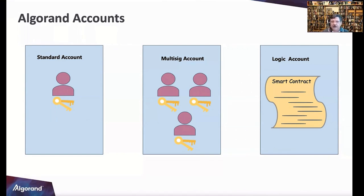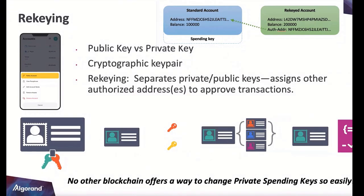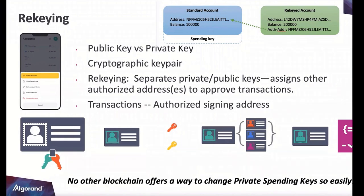A logic account is a smart contract that returns true and signs it, or returns false and doesn't. That brings us to rekeying and a deeper discussion on public versus private keys. A public key is what you share — that's how you receive money or assets. A private key is used for spending — the one you don't want anyone else to have. No other blockchain has rekeying by the way.